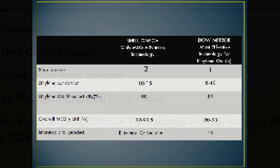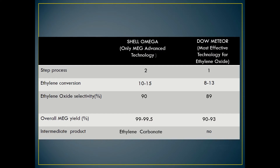In comparison of Omega technology and Dow Meteor, the step process of Omega is more than Dow Meteor. But Omega has more ethylene conversion, which is 10 to 15. The ethylene oxide selectivity for Omega is also slightly higher than Dow Meteor, and the same goes for overall yield. Omega produces an intermediate product, which makes it have more step processes.